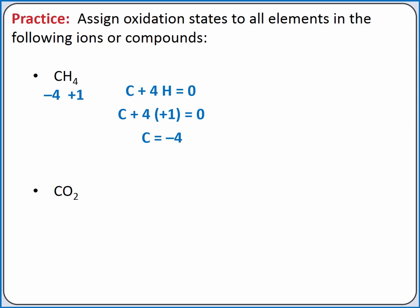Now let's find the oxidation states for carbon and oxygen in carbon dioxide. Our most important rule is that the sum of the oxidation states in a neutral molecule is equal to zero. So carbon plus 2 oxygen equals zero. From our table of nonmetals, oxygen has an oxidation state of −2. Solving for carbon, we get +4. So how is it that carbon can have a −4 oxidation state in methane and a +4 oxidation state in carbon dioxide?